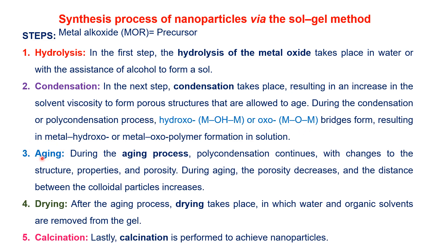The third step is aging. During aging, polycondensation continues and changes the structure, porosity, and properties of the resulting material. Porosity decreases and the distance between colloidal particles increases. The fourth step is drying, in which water and organic solvents are removed to form a gel. The fifth step is calcination, performed at high temperature, which yields the final nanoparticle product.